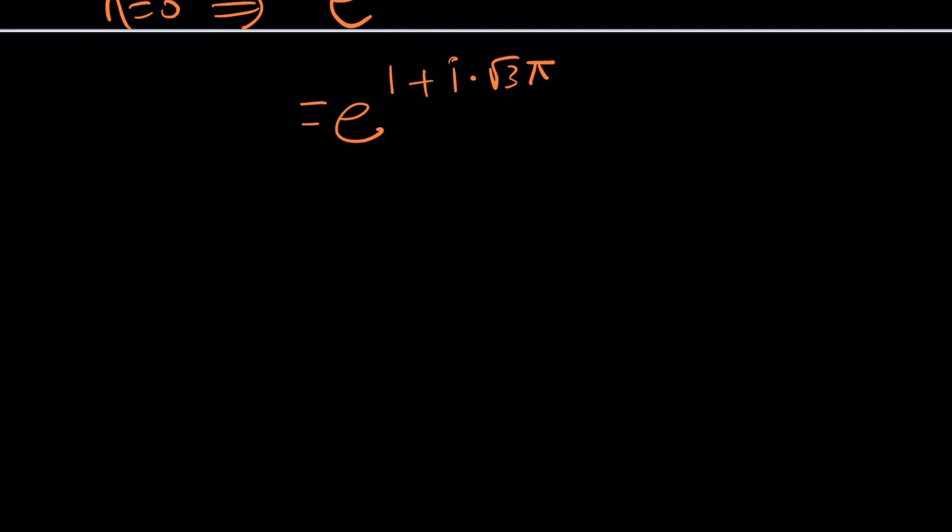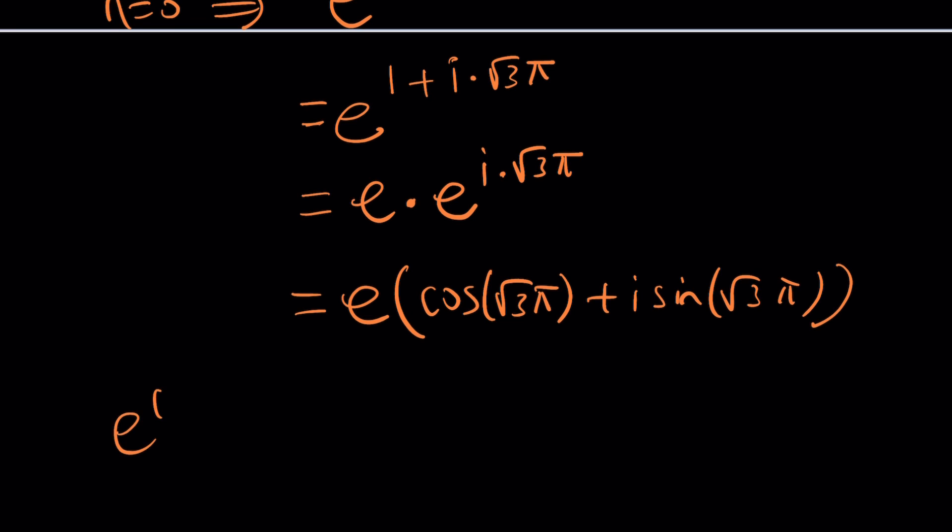Now what is that supposed to mean? It may not make sense to you but e to the power a complex number we can separate it and write it like this and this is the most beautiful part because thanks to Euler we have the most beautiful equation. Now we can go ahead and write this as e times cosine root three pi plus i times sine of root three pi because Euler said e to the power i theta is cosine theta plus i sine theta and it is the most beautiful equation.